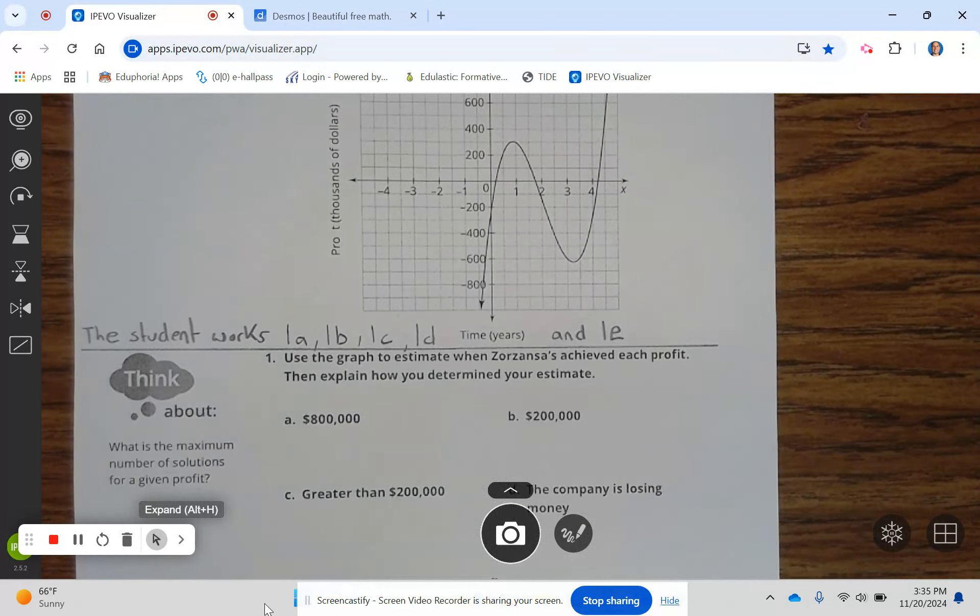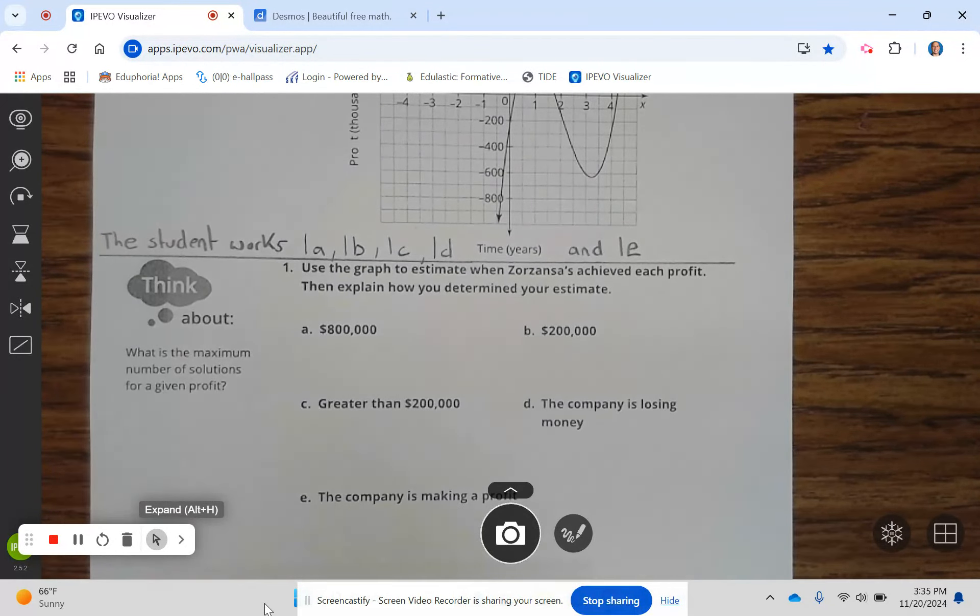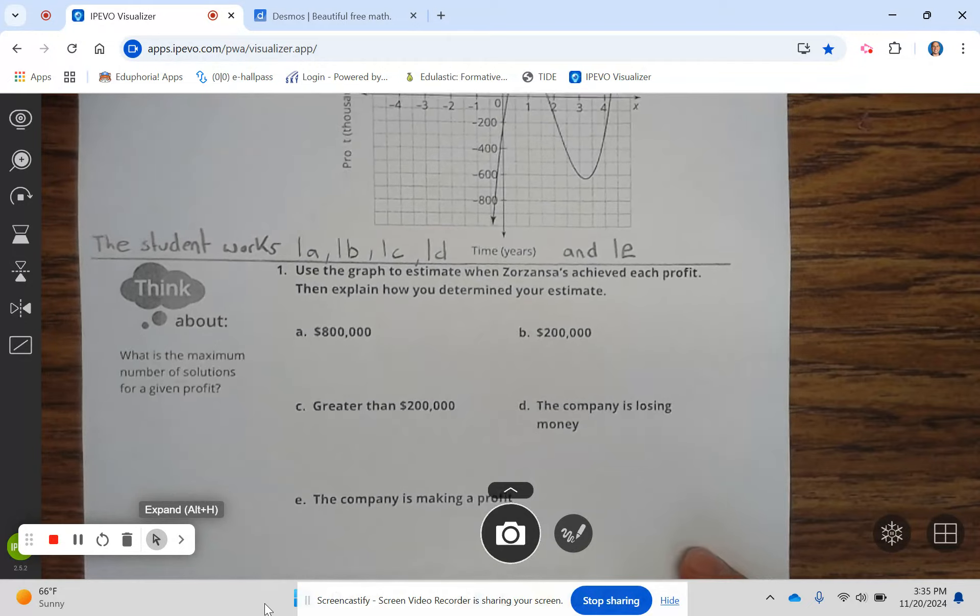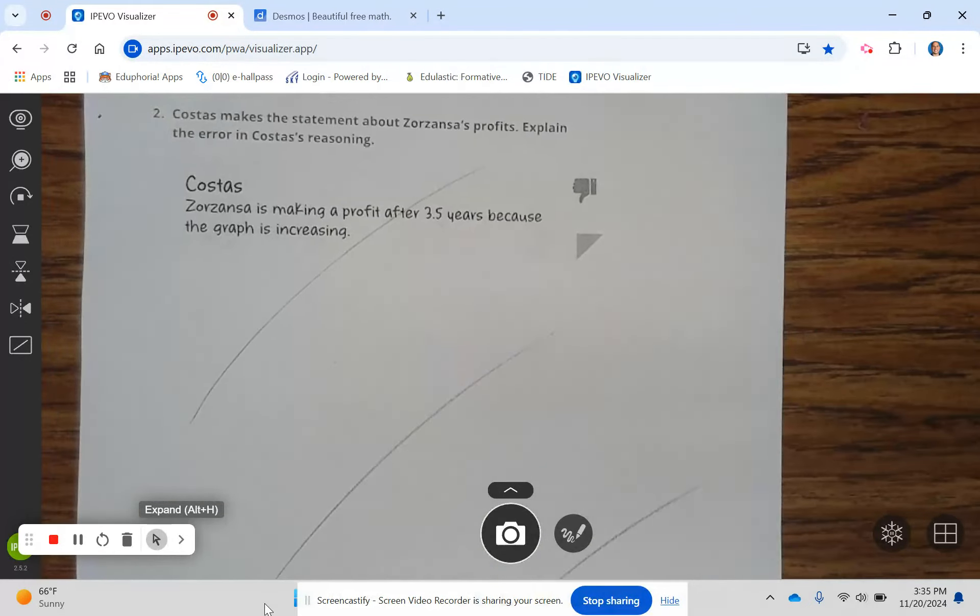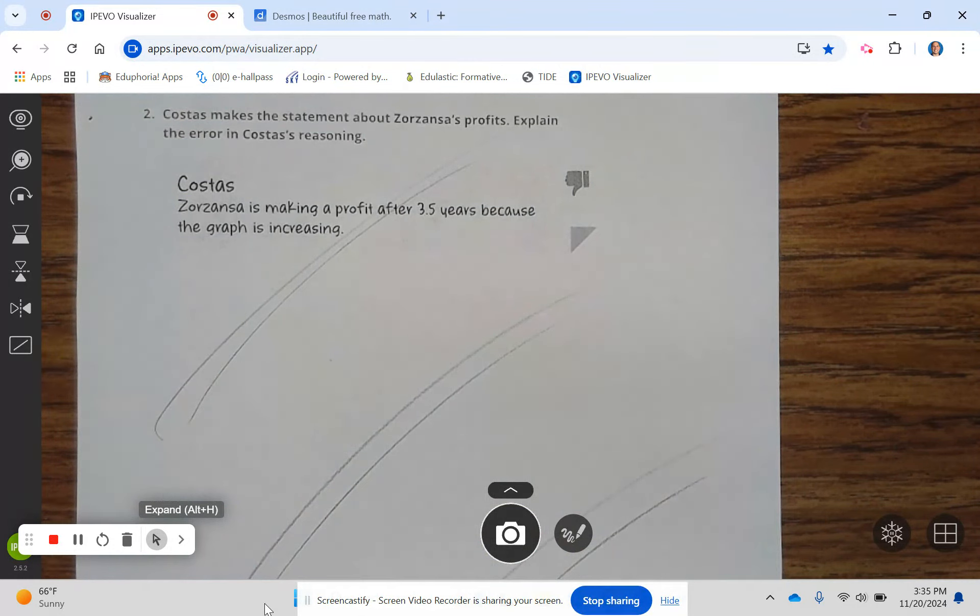The student works 1A, 1B, 1C, 1D, and 1E. Let's take a look at the next page. Go ahead and mark this page out and finish up your notes. Start working on the assignment and have a wonderful Wildcat Day.